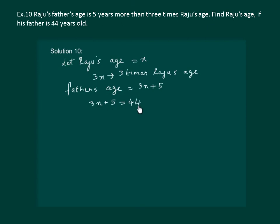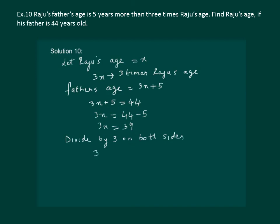Now let us solve this equation. Let us transpose this 5. We get 3x equal to 44 minus 5, so 3x equal to 39. Now, dividing by 3 on both sides, we get 3x by 3 equal to 39 by 3. Solving further gives us x equal to 13. So we can say that Raju's age is 13 years.